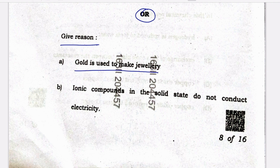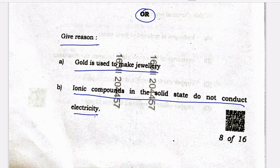Optional question — give reason. (a) Gold is used to make jewellery rings. The reason is that it offers a lustrous appearance, is resistant to tarnishing, and has rarity. (b) Ionic compounds in the solid state do not conduct electricity. The reason is that the ions are held in a fixed position within the strong crystal lattice and since the ions cannot move freely, they are unable to carry electric current. However, when dissolved in water or melted, the ions become free to move, allowing the substance to conduct electricity.